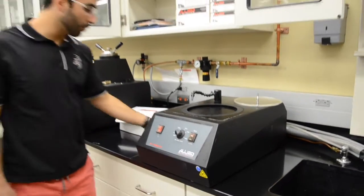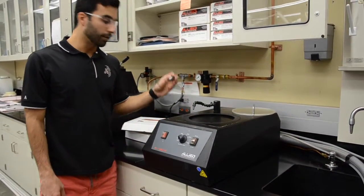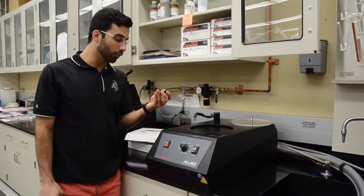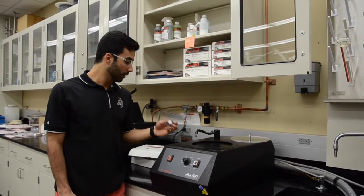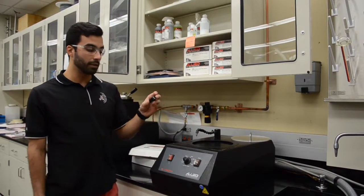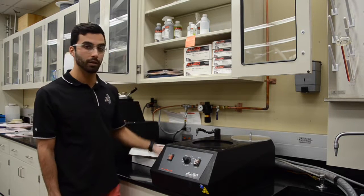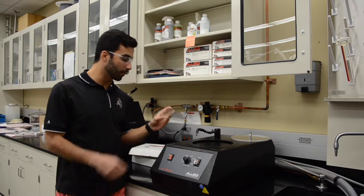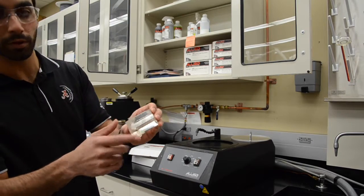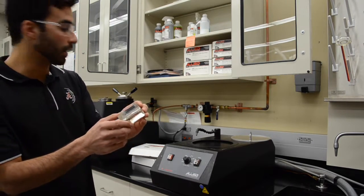For grinding, today we're going to be using a dummy sample to show you how to do the grinding steps. Since the finishing in the sample is not that bad, we can start with a 320. If you have a sample that has a really bad surface finish like this one, you may want to start with a 180.